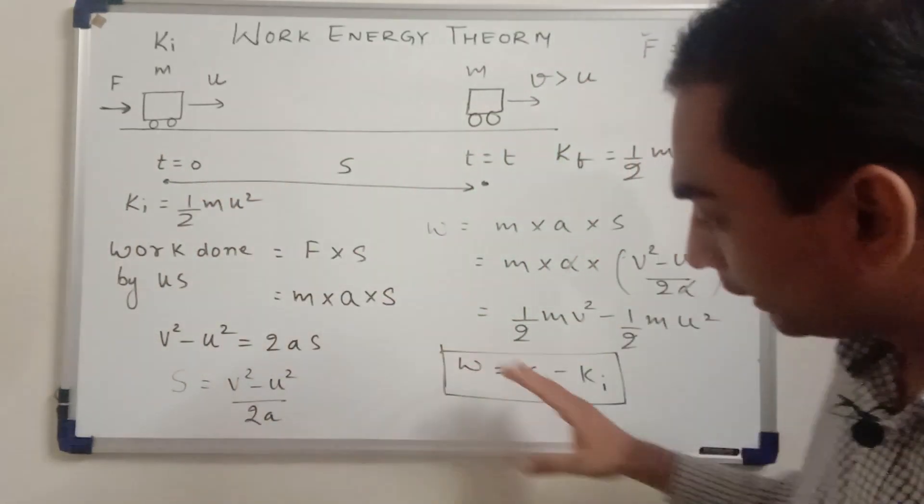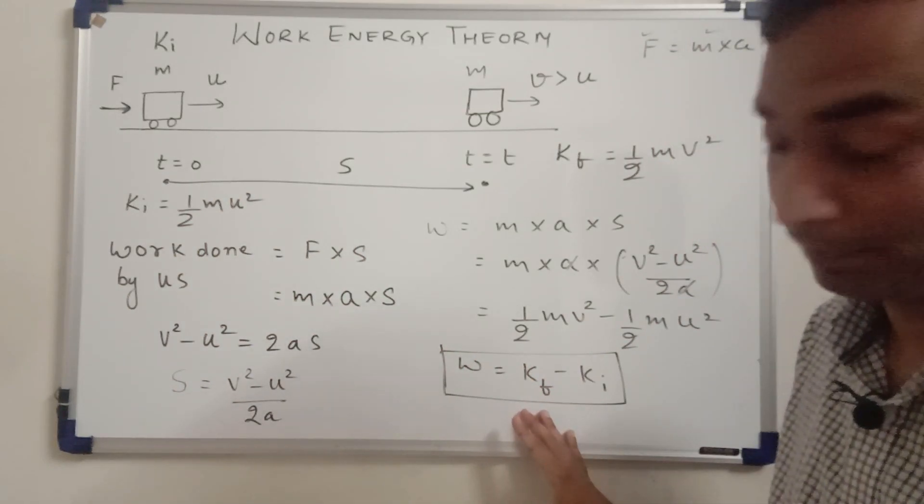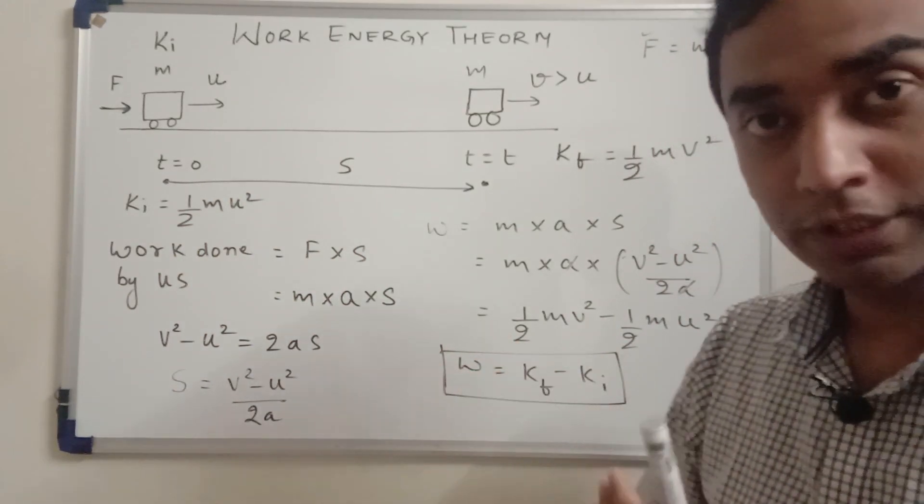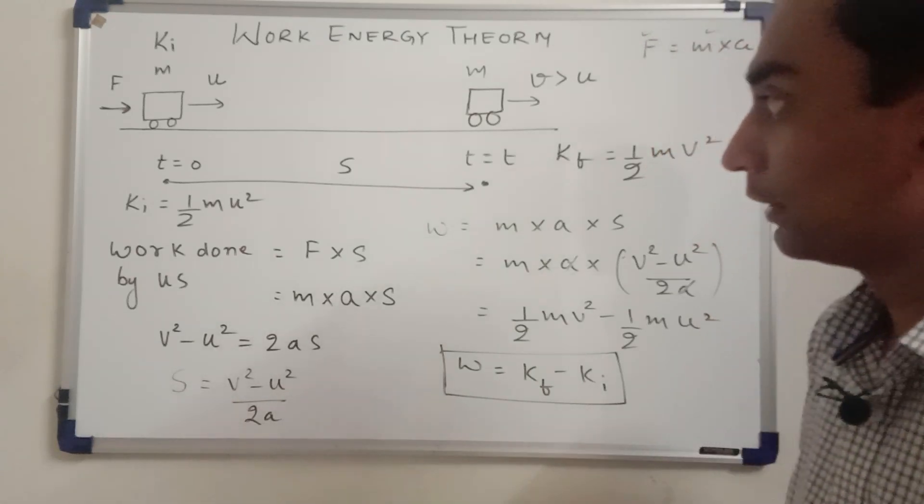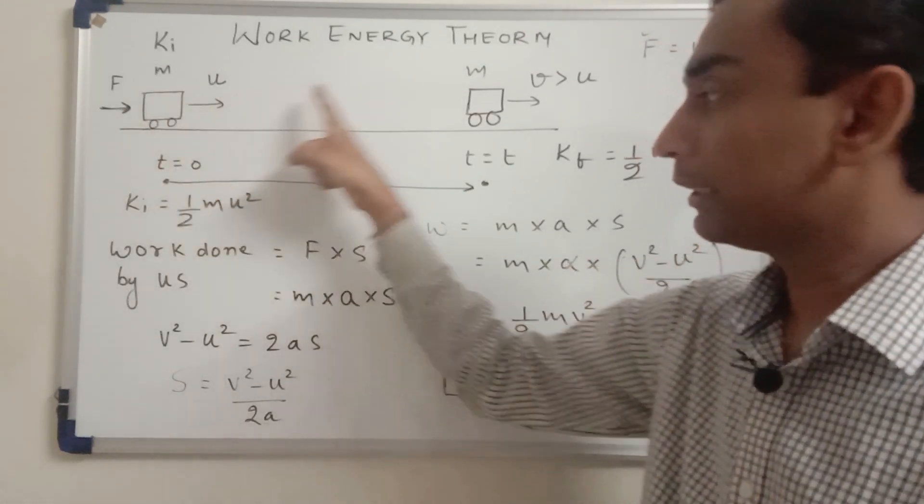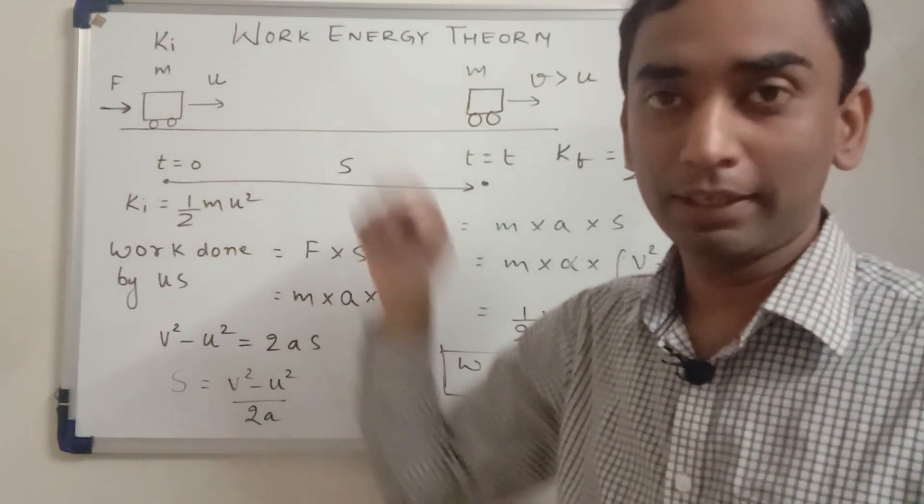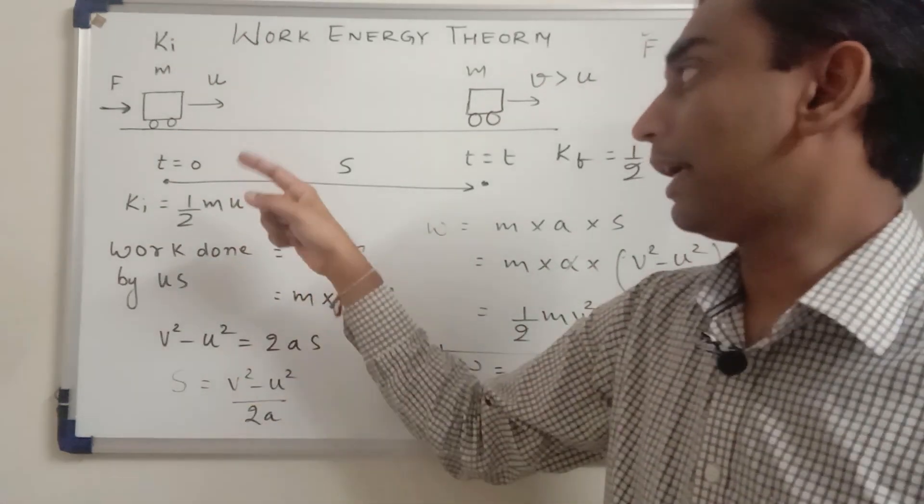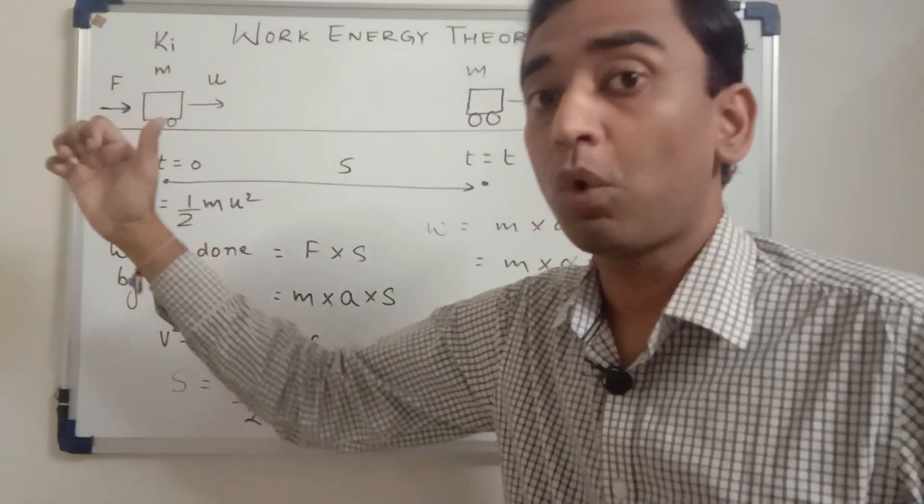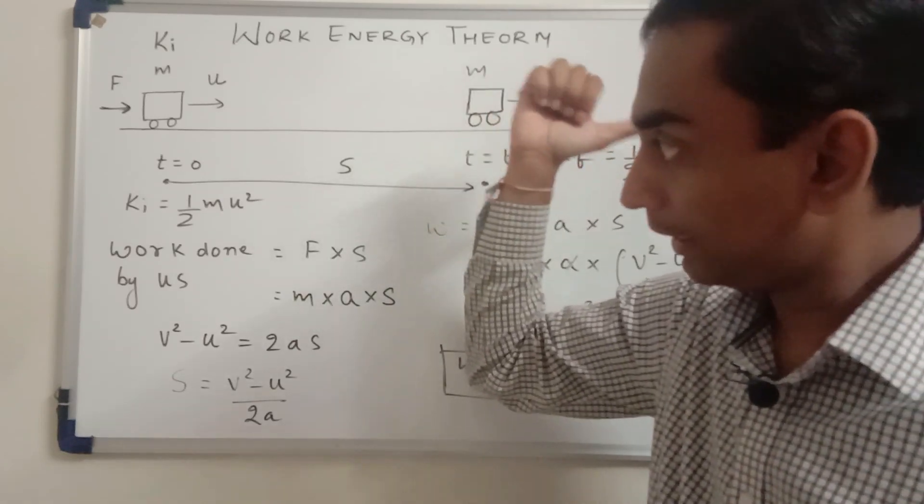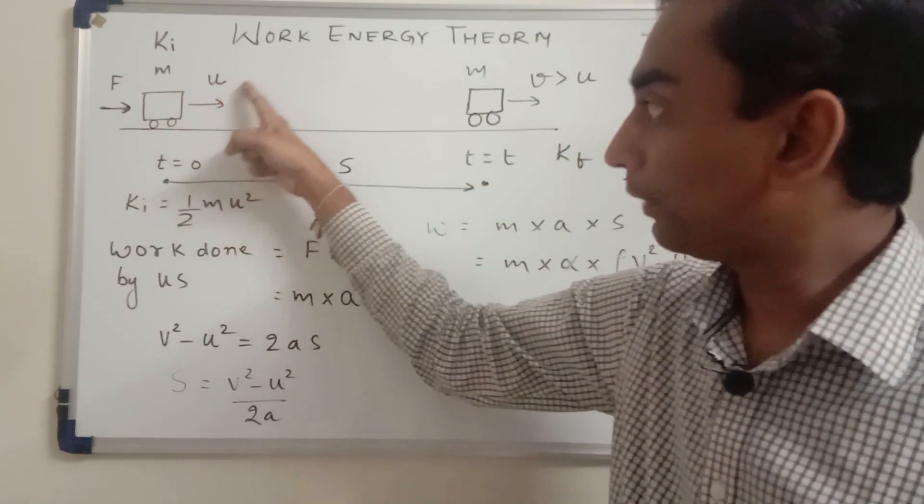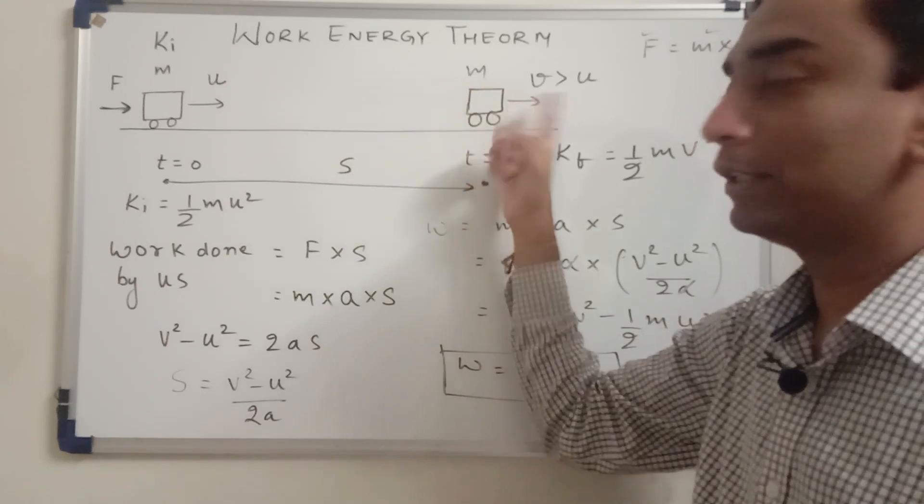Now this works the other way round also. Suppose if this car is coming in this direction and if you exert the force in that direction, then the car is going to decelerate in that direction and the velocity of the car will keep on decreasing and finally it stops.